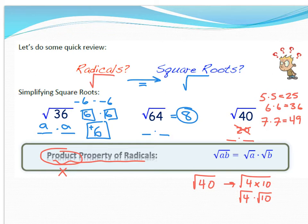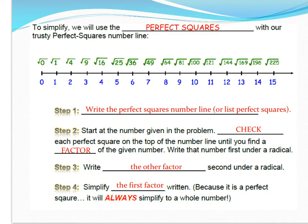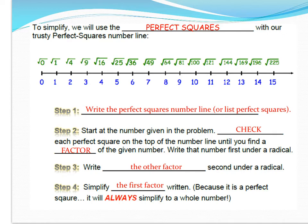This might be a little confusing at first, but you'll get the gist as we go through. Here's what's called a perfect squares number line. I'm looking at positive numbers from zero upward. The perfect squares are 0, 1, 4, 9, 16, 25, 36, and so on. They're called perfect squares because their square root is a whole number: √0 = 0, √1 = 1, √4 = 2, √9 = 3. We use these perfect squares to help us simplify radicals.